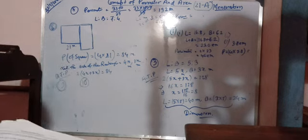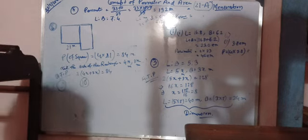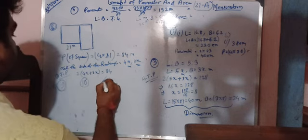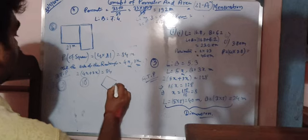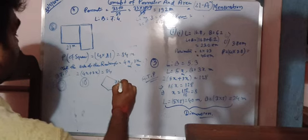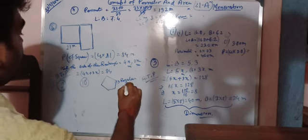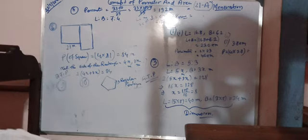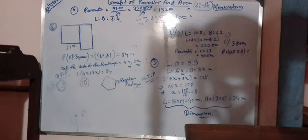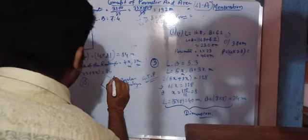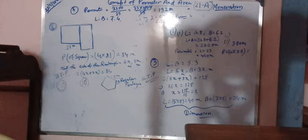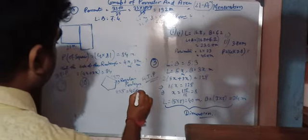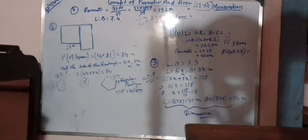Question 10: Find the perimeter of a regular pentagon with side 8 centimeter. A regular pentagon is a geometrical figure with five equal sides. So the perimeter = 8 into 5 = 40 centimeter.